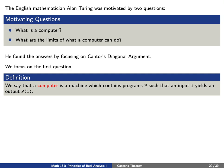We can make a slightly more theoretical framework for a computer. There are basically two parts. First, there should be a tape — nowadays you can think of this as a hard drive. This tape will have infinite length consisting of individual cells, similar to the idea of sectors today, and each cell will contain exactly one symbol. Second, there is a head which can read or write one cell of a tape at a time, and can also move the tape to the left or to the right. The head contains an instruction — a program — to create a new symbol. It will read a symbol and perhaps replace that with the new symbol p(i).